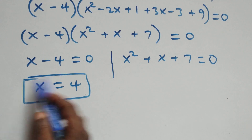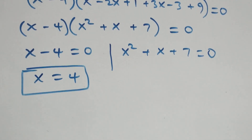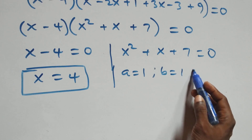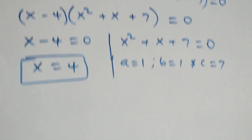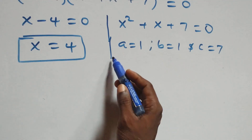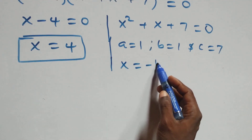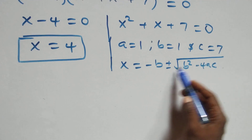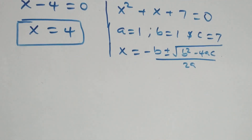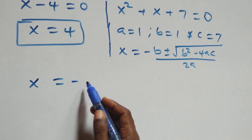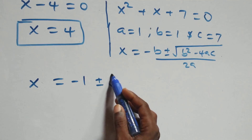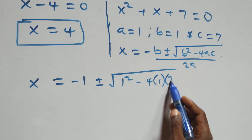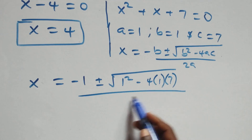Solving x minus 4 equals 0 gives x equals 4, which is a real solution. For the quadratic x squared plus x plus 7 equals 0, we have a equals 1, b equals 1, and c equals 7. Applying the quadratic formula: x equals minus b plus or minus square root of b squared minus 4ac, all over 2a. This gives x equals minus 1 plus or minus square root of 1 minus 4 times 1 times 7, all over 2.